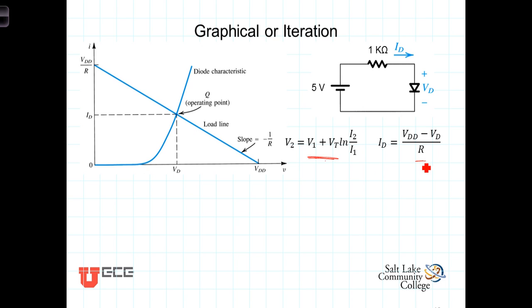The graph of the straight line here is the graph of Ohm's law, known as the load line. The exponential model curve is also plotted, and the point where the two intersect is what we're looking for — that's the equilibrium point, the operating point, or the bias point.